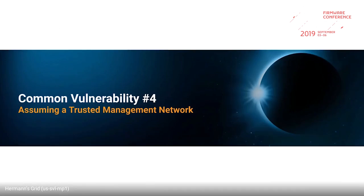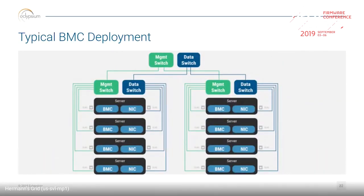Management networks: when you typically deploy a BMC, the common guidance is do not put the BMC on your main data network — put it on an isolated management network with restricted access, because we know BMCs are insecure, so just segment it. So you go through the expense of putting in an extra switch and running extra cabling. This also gives you a nice ability to hit management from the data plane if needed. Usually that management switch would have a path to both the BMC and the data switch, because switches have BMCs now.